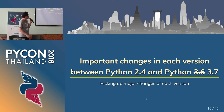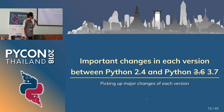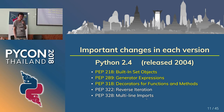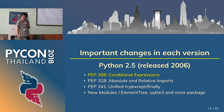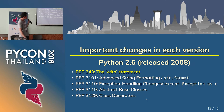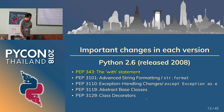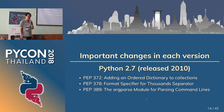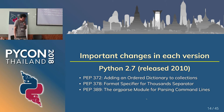Now, important changes in each version between Python 2.4 and Python 3.7 — let's pick up the major changes. Python 2.4, released in 2004, introduced built-in sets, generator expressions, decorators for functions and methods, and more. Python 2.5, released in 2006, added conditional expressions. Python 2.6, released in 2008, was the last update for Python 2.5. An important feature is the with statement.